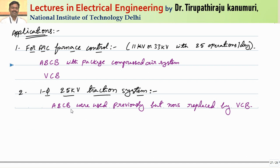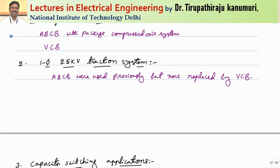For arc furnace applications, the furnace is designed to operate at either 11 kV or 33 kV with about 25 operations per day. When there are many operations per day, the disadvantage of oil circuit breakers is that the oil gets decomposed into gases and carbon is formed, so carbon deposits degrade the dielectric property. For frequent operations, oil circuit breakers are not preferred. In practice, we go for either air blast circuit breakers (ABCB) or vacuum circuit breakers. Nowadays the trend is vacuum circuit breakers for arc furnace applications.